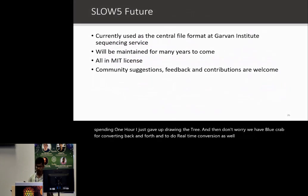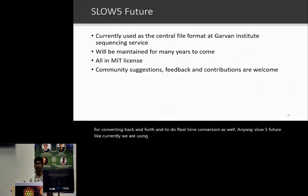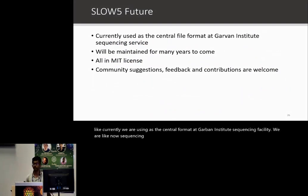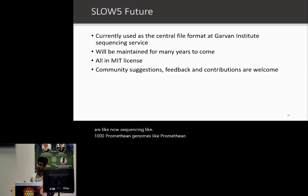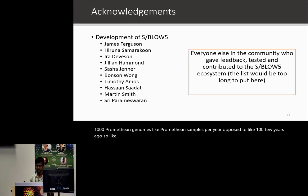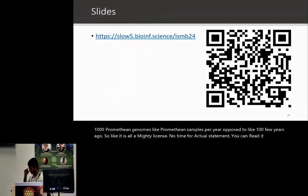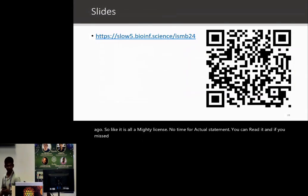As for the SLOW5 future: we are currently using it as the central format at the Garvan Institute sequencing facility. We are now sequencing around a thousand PromethION samples per year, up from about 100 a few years ago. It's all MIT licensed. Thank you — slides are available if you missed anything.